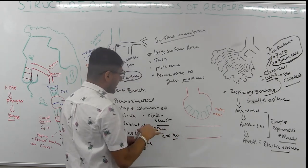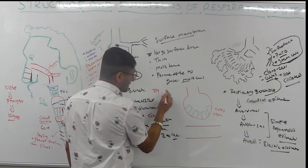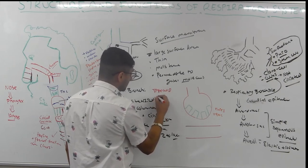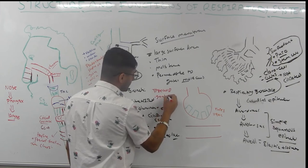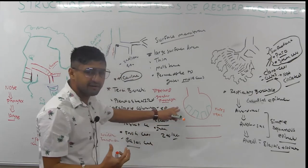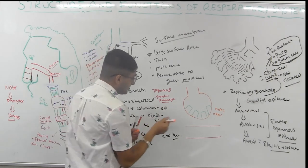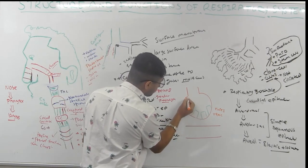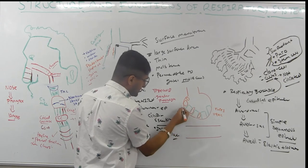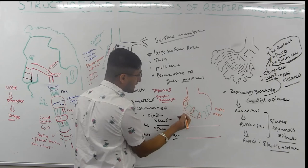There are also type 2 pneumocytes, also called granular pneumocytes. These are very compact and small, and they have lamellar bodies. Type 2 pneumocytes are the ones that produce surfactant.